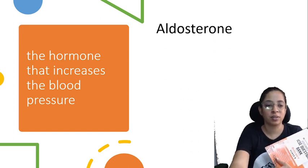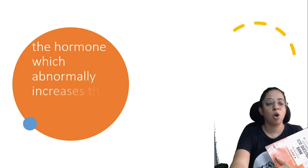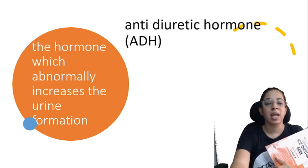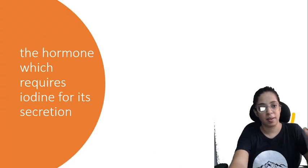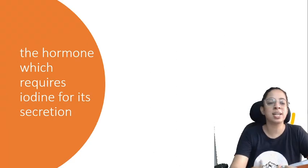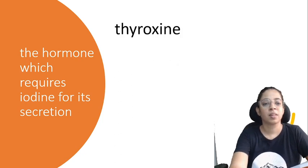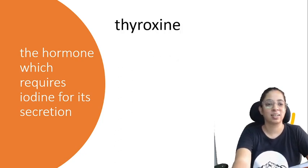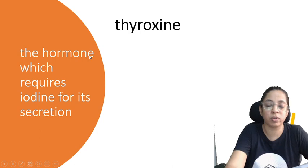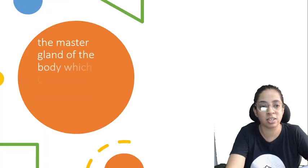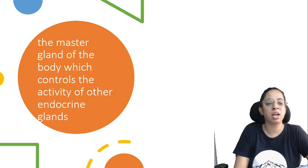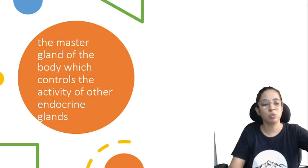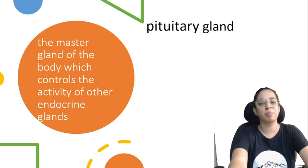Yes, aldosterone. The hormone which abnormally increases urine formation — that is antidiuretic hormone, ADH. The hormone which requires iodine for its secretion — the answer is thyroxine. You have to read the question carefully: they have asked for the hormone, so you write thyroxine. The master gland of the body which controls the activity of the other endocrine glands — almost all of you will be able to answer this — yes, that's the pituitary gland.